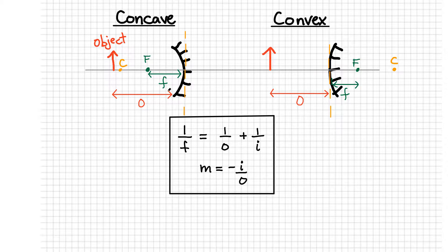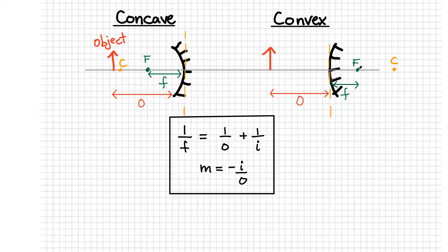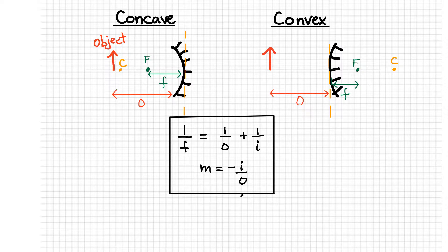We typically place an object in front of the mirror at a distance O from the mirror. For the convex case, we place an object in front of the convex mirror. It's curved the other way and the shiny surface is still on the left side. For convex mirrors, the focal point is behind the mirror, which is a little different, and also the radius of curvature. Both equations — 1 over F equals 1 over O plus 1 over I, and the magnification equation — can be applied to both mirrors.